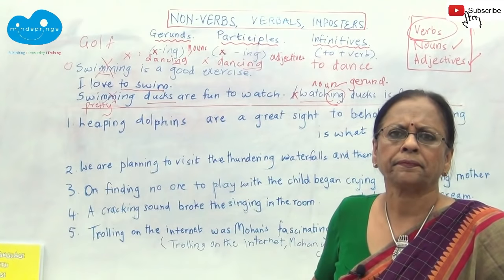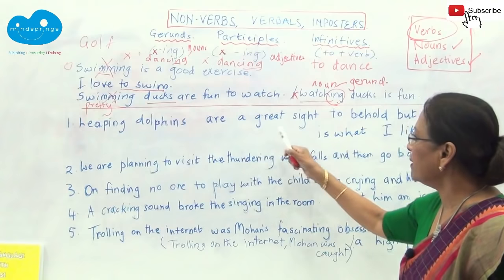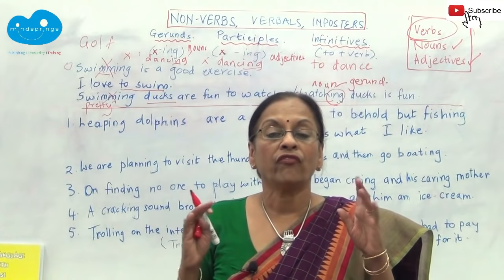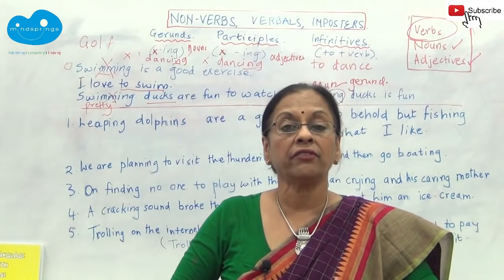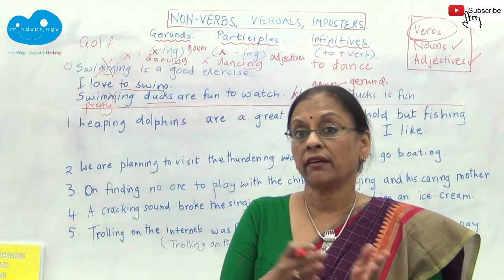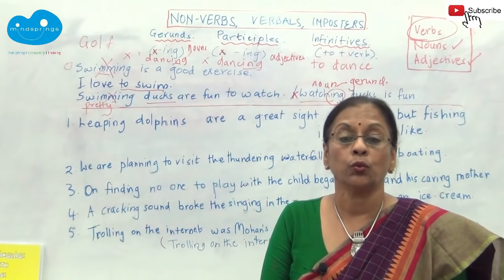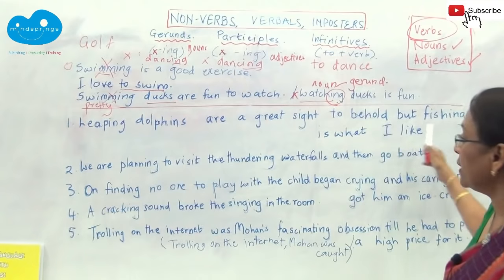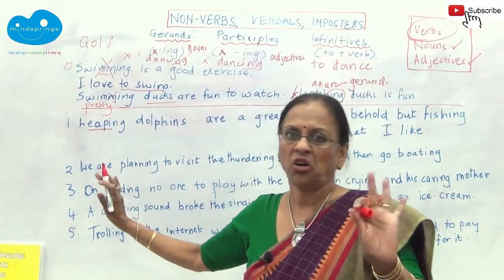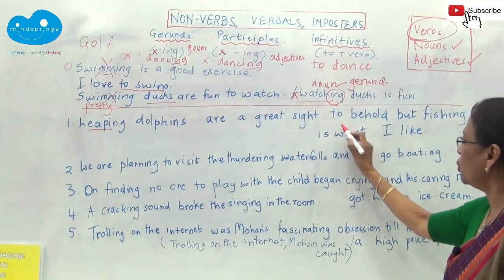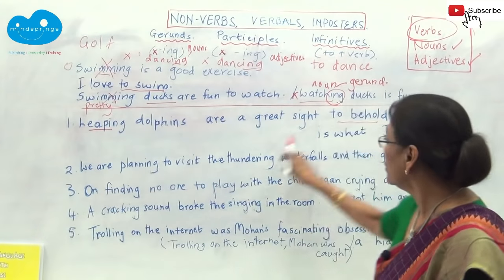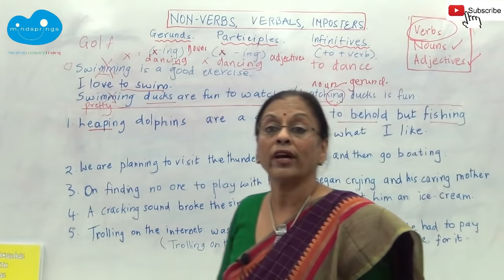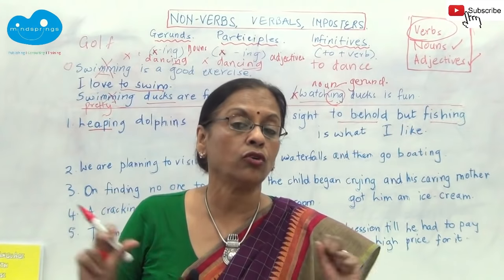Let's look at some sentences. 'Leaping dolphins are a great sight to behold, but fishing is what I like.' In my grammar series Language with Ease, as early as grade 2, children pick out that certain words are not verbs. In this sentence, a child will immediately pick up 'leaping' — not a verb, nothing in front of it. They will pick up 'to behold' — to plus verb, not a verb. And they will pick out 'fishing' — no helper in front of it.